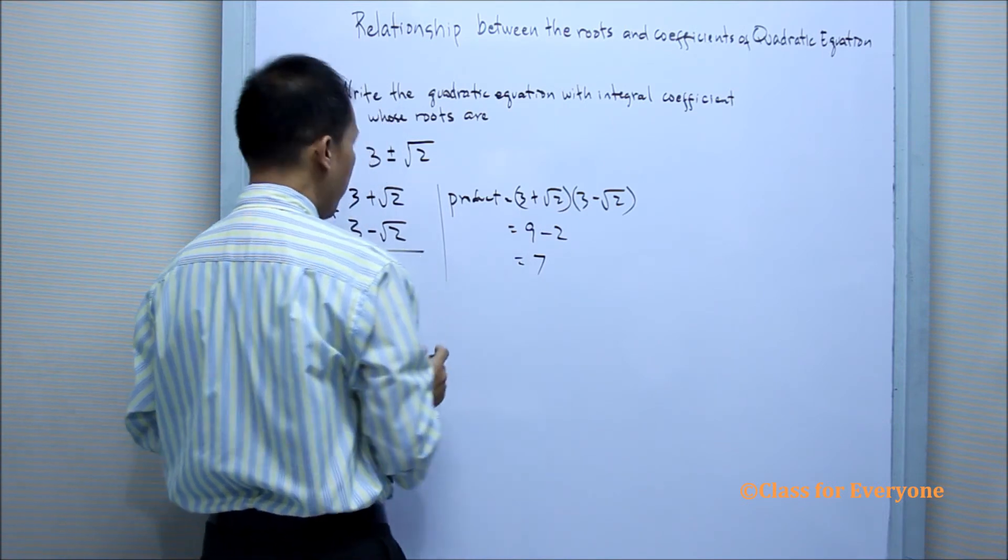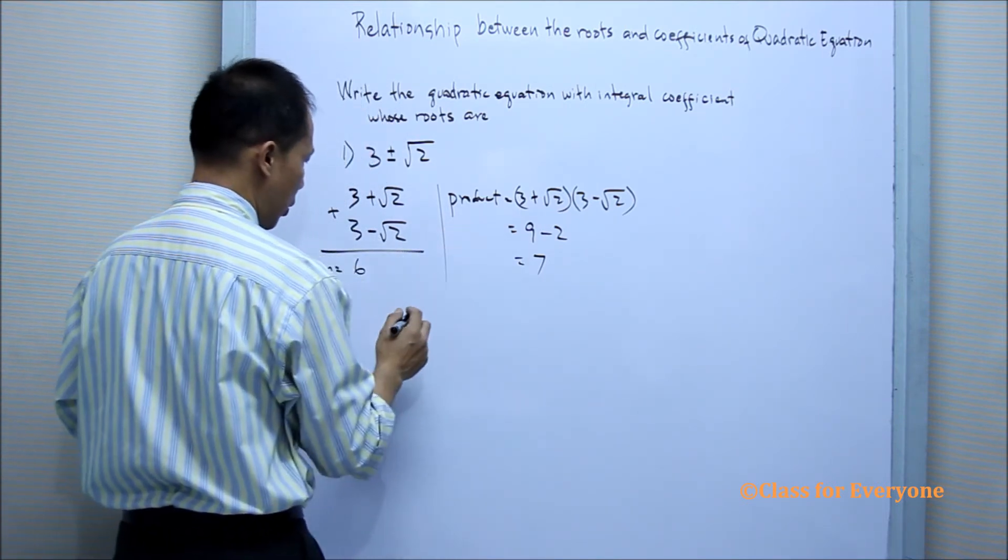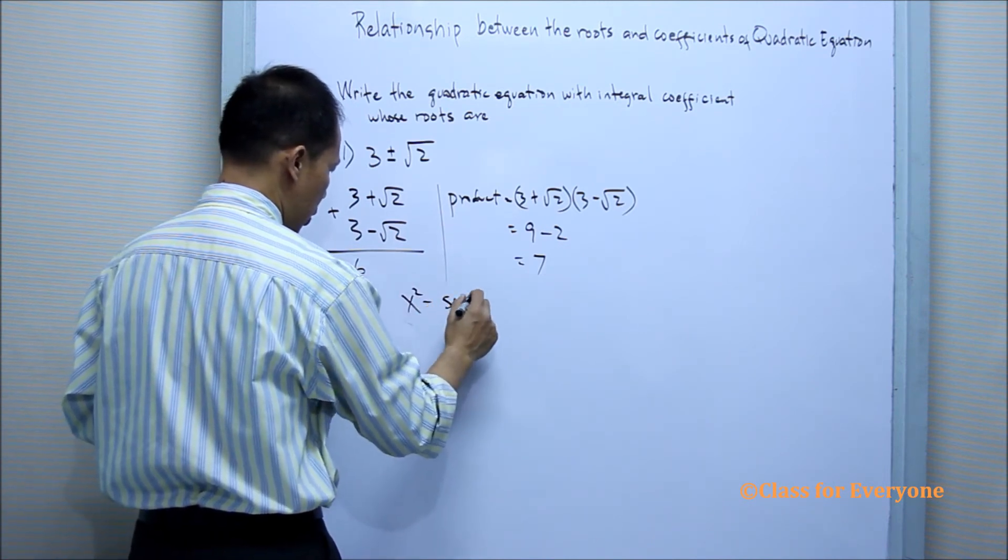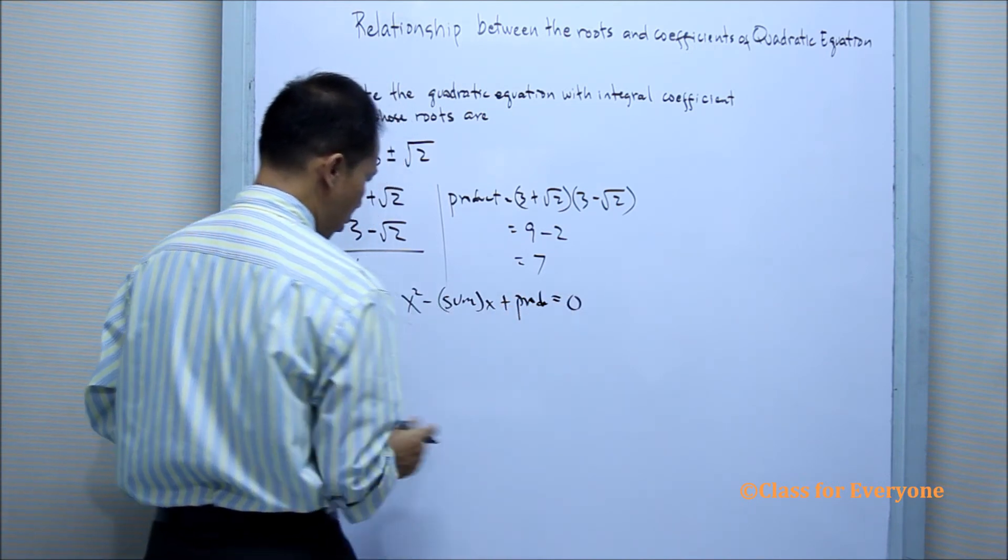So that is the product. In order to find the quadratic equation, it is x squared minus the sum x plus product equals 0.